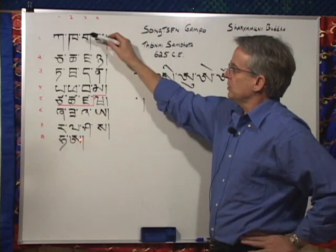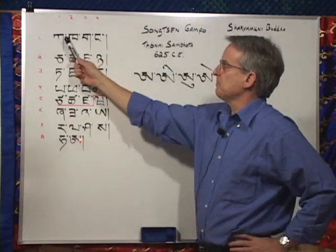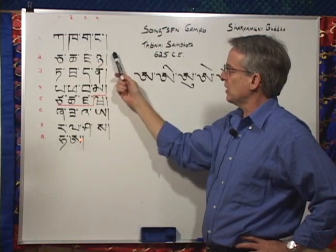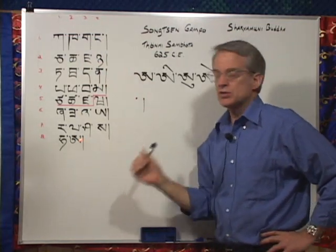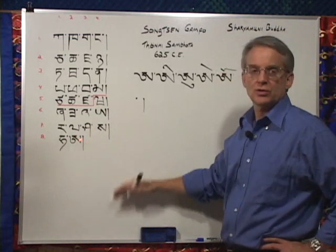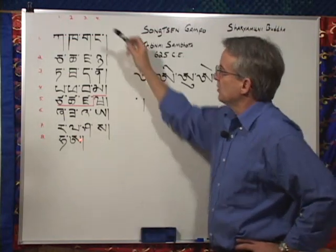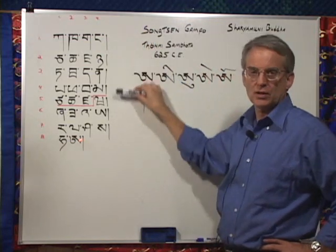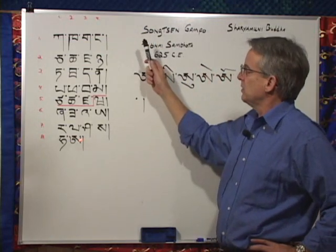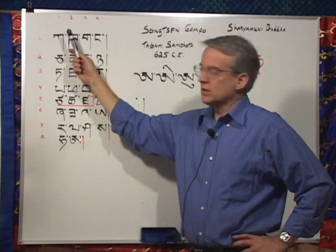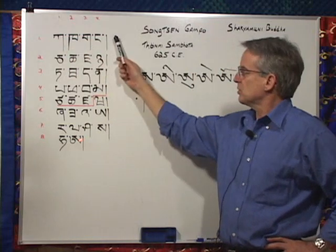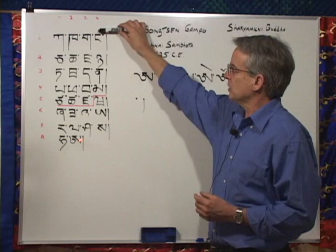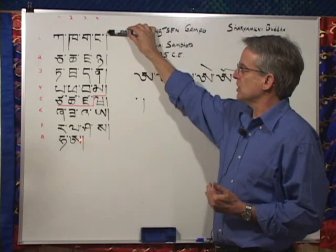When we look at the alphabet, we notice a series of dots in between the letters, and then at the end of the line, a vertical stroke. These are the only two punctuation marks in Tibetan. The dots separate syllables, and the strokes separate lines. The dots are called tsheg, and the lines are called shad. If a line ends in this letter here, na, it has both a tsheg and a shad.